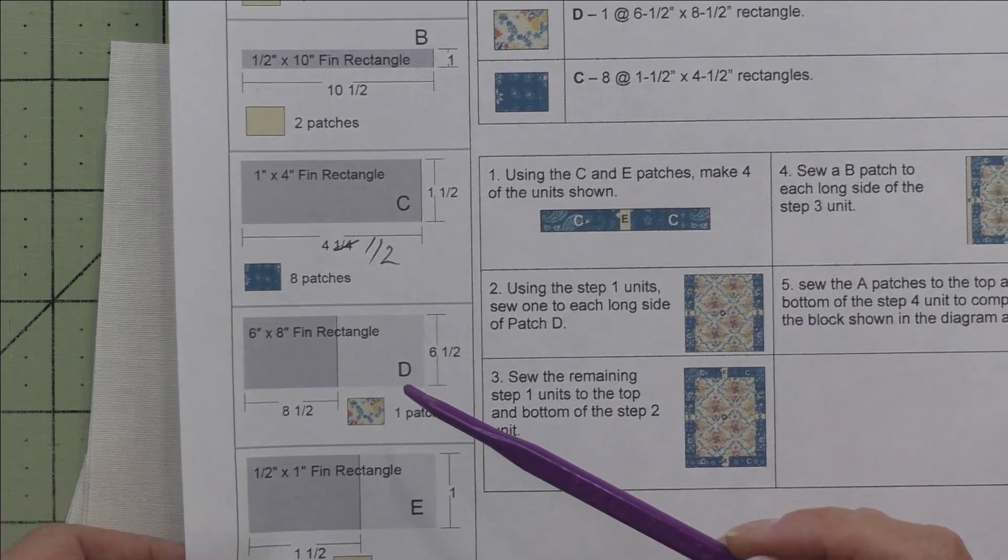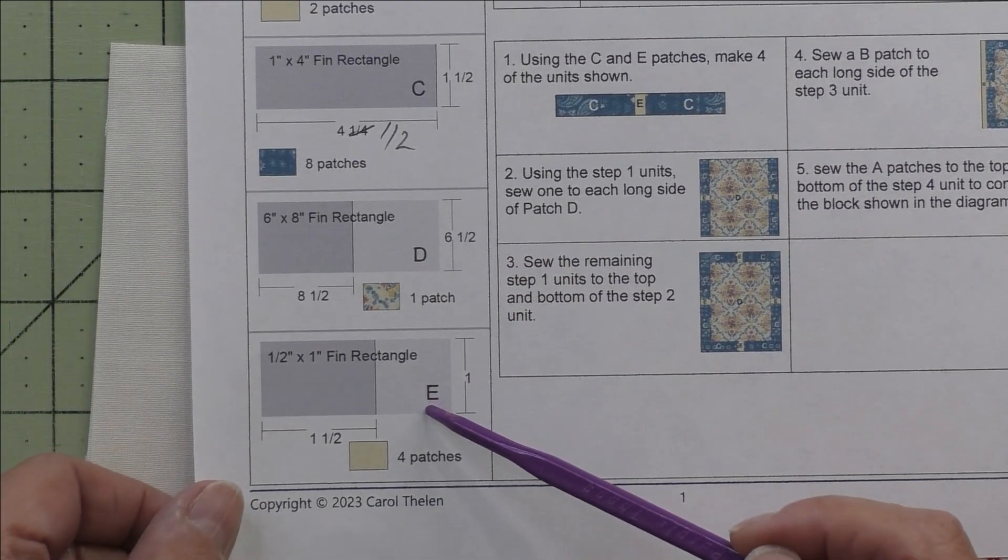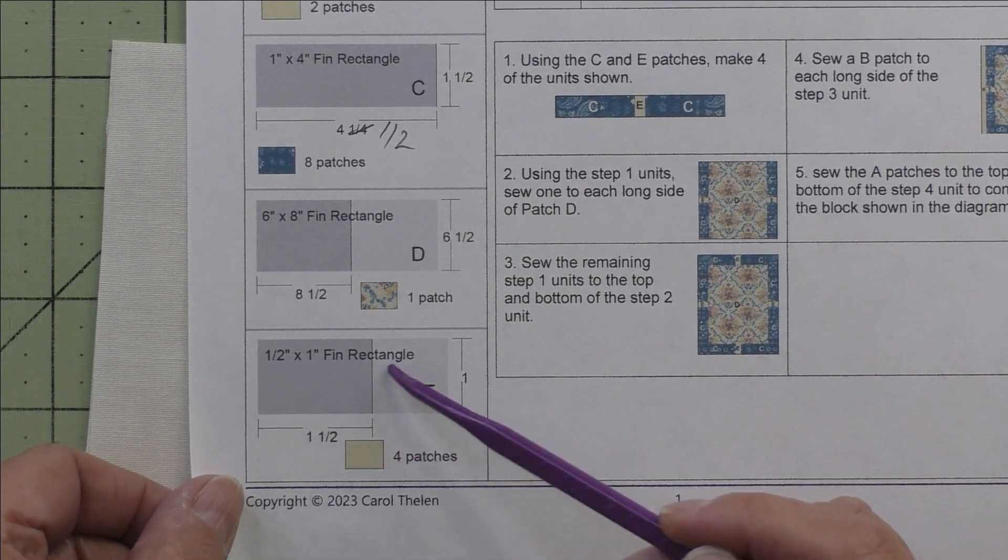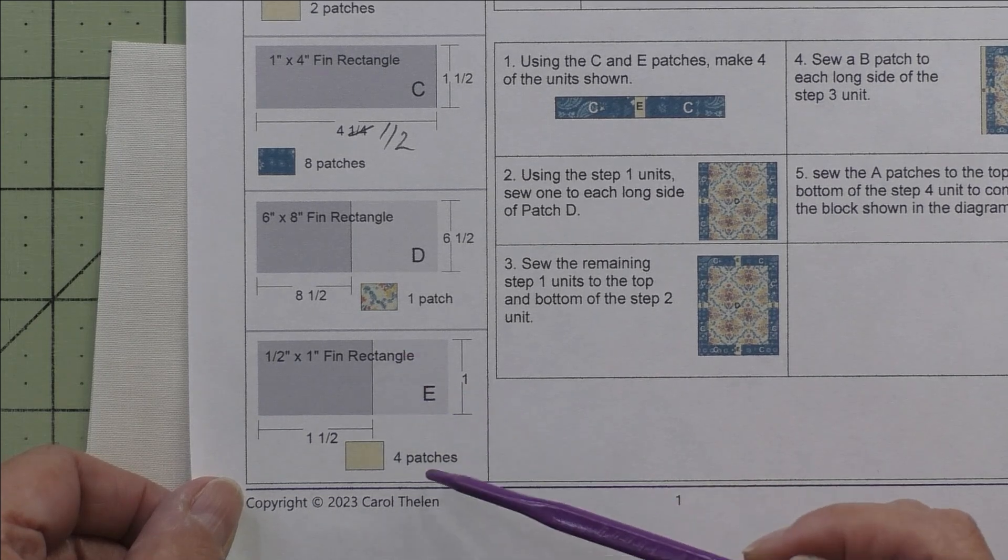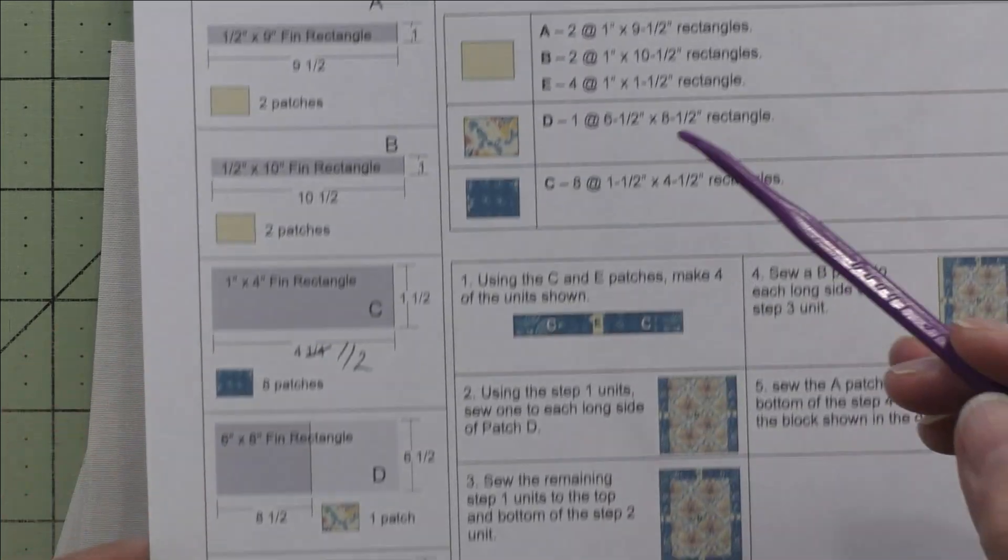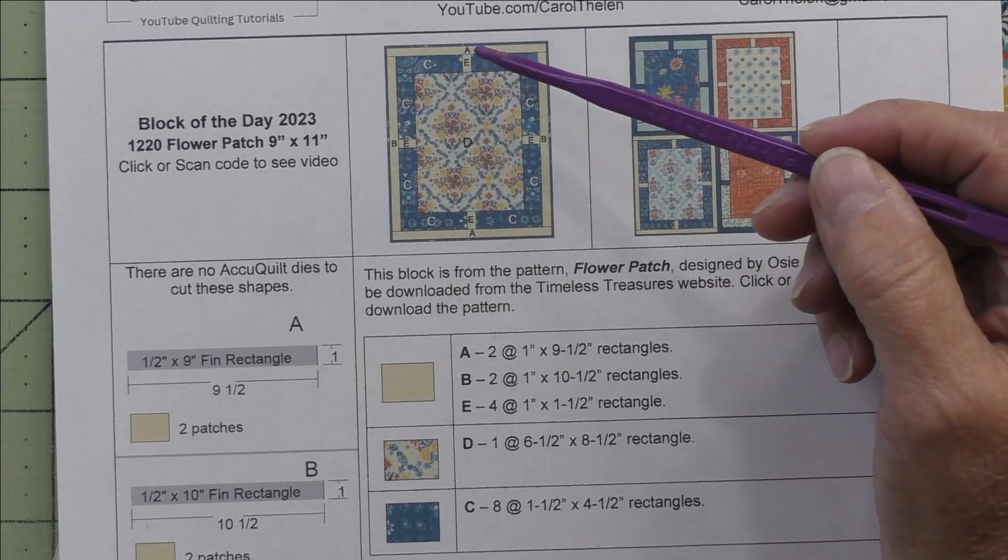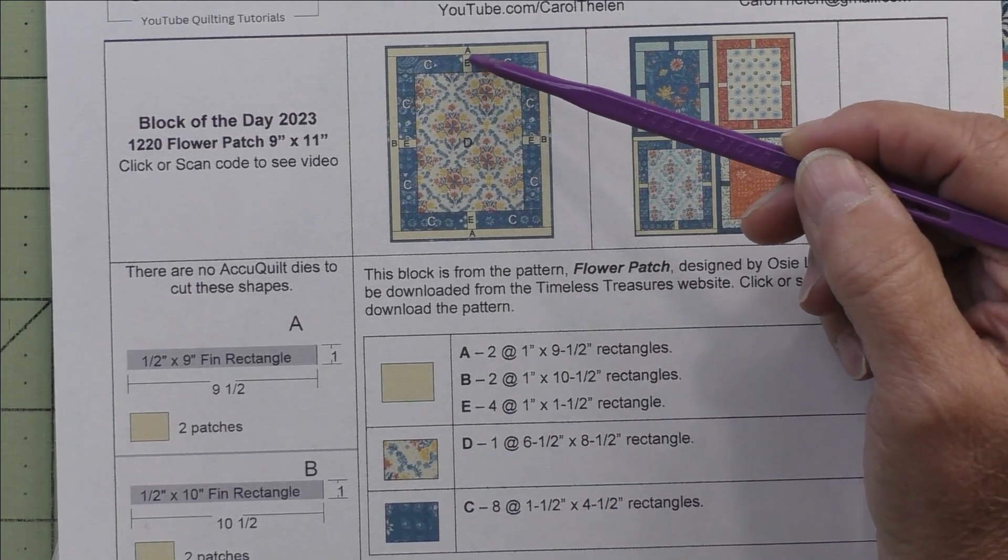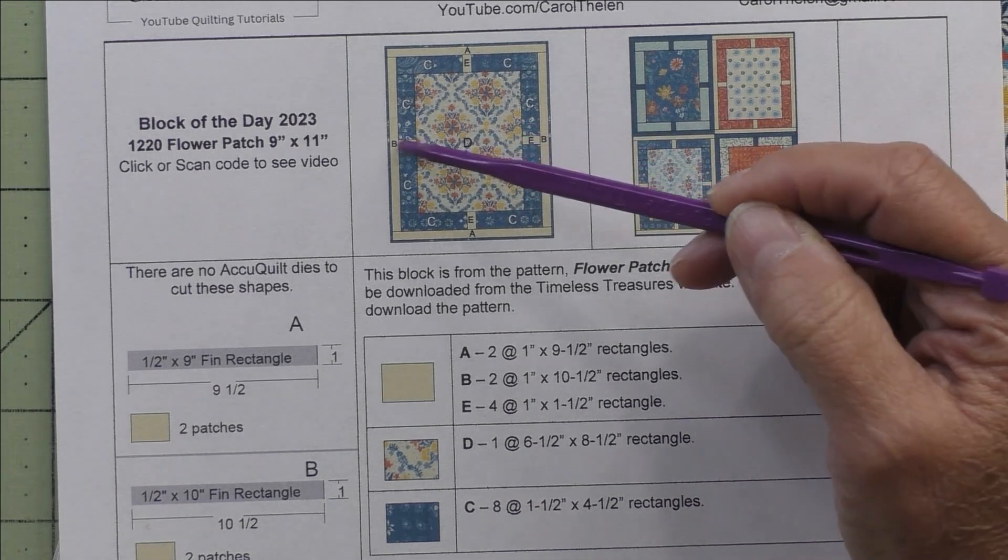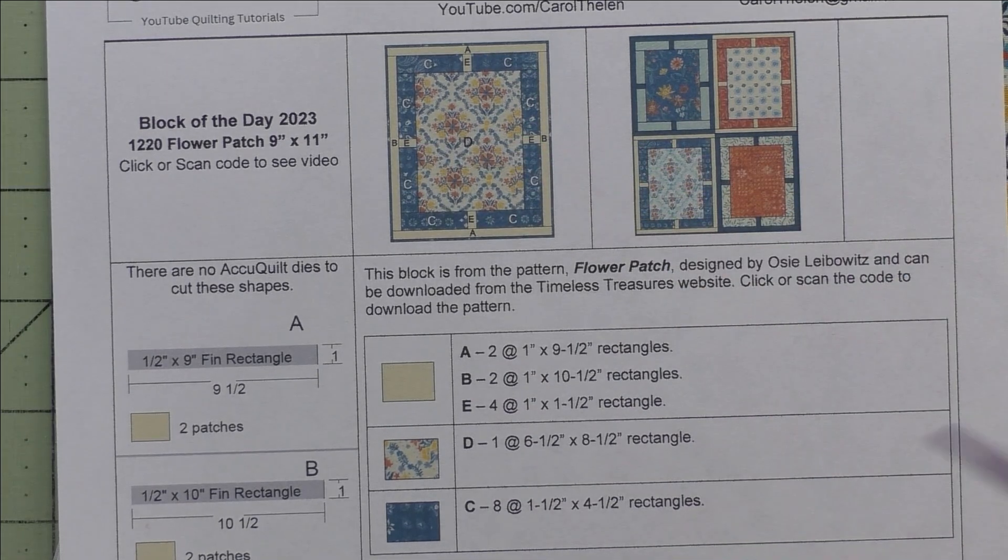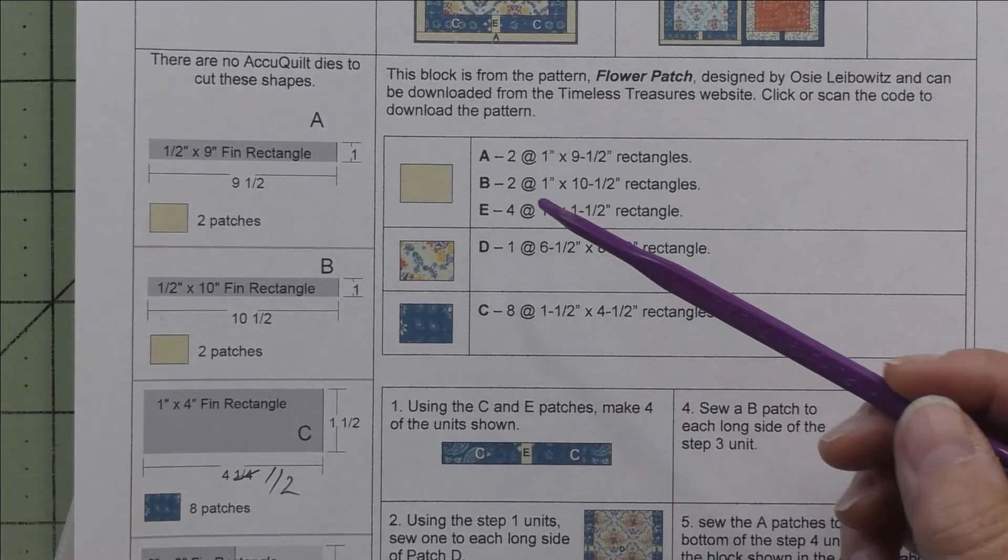Patch E is a 0.5 inch by 1 inch finished rectangle. We cut 1.5 inch by 1 inch rectangles and we'll need four. This little piece is the part of the background that goes into the frame, and there's one in the center of each side.